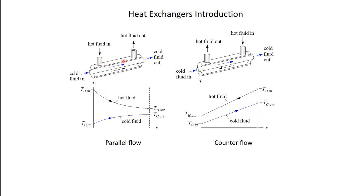In the parallel flow case, as you move in the direction of flow, the hot fluid temperature drops and the cold fluid temperature rises. You get a large temperature difference and a large rate of heat transfer at the inlet, and then that temperature difference gets smaller and smaller toward the exit. In the counter flow case, the hot fluid enters at one end while the cold fluid enters at the other end. The temperature difference is never as large as in parallel flow, but it also doesn't drop as much. Because of their configuration, these are the same physical device but perform as differently as any two heat exchangers can.